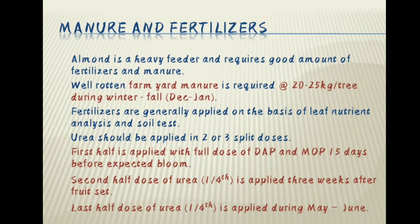Manure and fertilizers. Almond is a heavy feeder and requires good amounts of fertilizers and manure. Well-rotten farm yard manure is required at the rate of 20 to 25 kg per tree during winter, i.e., from December to January. Fertilizers are generally applied on the basis of leaf nutrient analysis and soil test. Urea should be applied in two to three split doses. The first half is applied with full dose of DAP and MOP, 15 days before the expected bloom. The second quarter dose of Urea is applied three weeks after fruit set. The last quarter dose of Urea is applied during May-June.